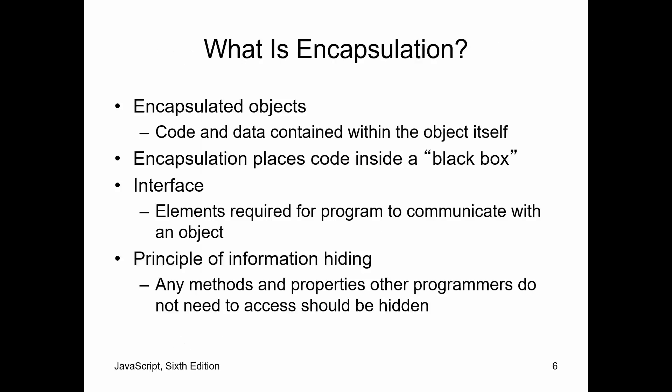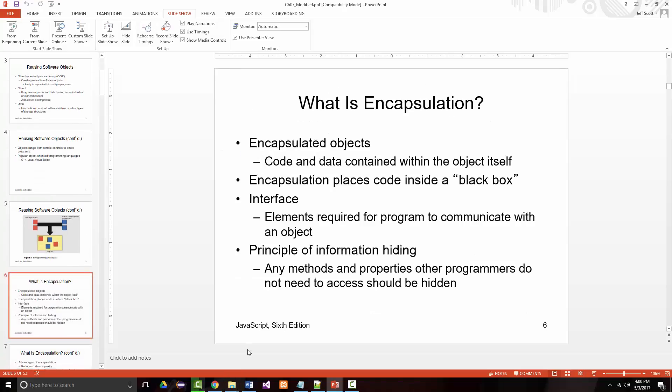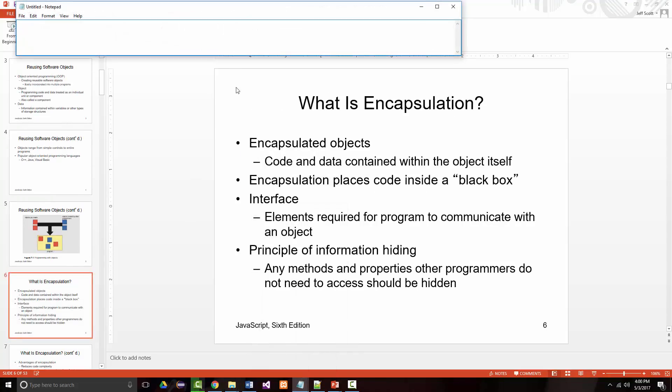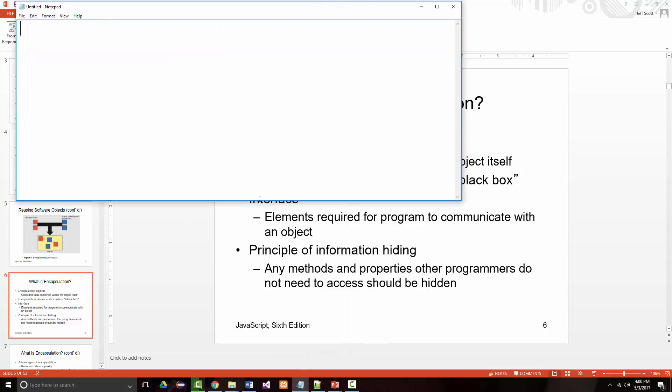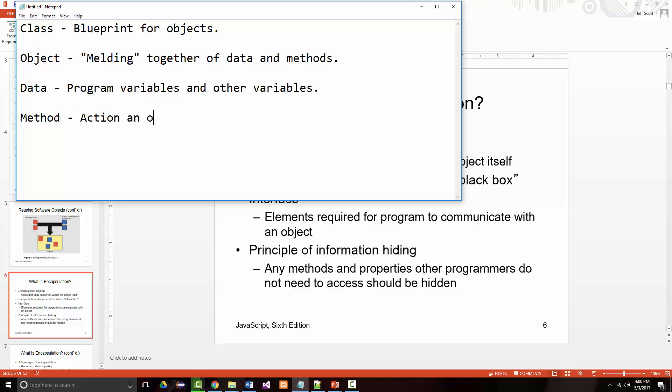Before we get into this, I'm going to talk about some of the hallmarks of object-oriented programming. The first thing is what's called a class. A class is a blueprint for objects. And what's an object? It's a melding together of data and methods. What's data? That's basically our program variables. What's a method? A method is an action an object can perform.